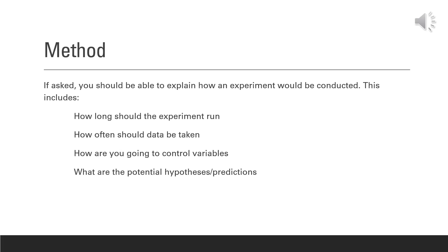If the question asks you to give a method for testing a hypothesis, you should be able to explain how the experiment would be conducted concisely but clearly. This requires you to identify how long the experiment should run and how often you should take data, how you are going to control the variables, what are potential hypotheses and predictions, and what are the specific steps you're going to take. The experimental designs you'll be asked to describe will be brief and will not require extensive detail in terms of measurements or long-scale time frames.